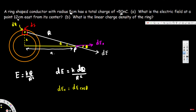Since y-components cancel, we only take the x-component. cos(θ) equals adjacent over hypotenuse, so cos(θ) = a/r. Substituting into our expression: dEx = k·dq/r² · (a/r), which gives us dEx = k·dq·a / r³.